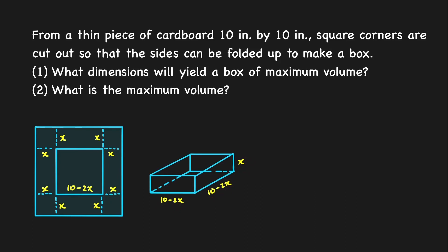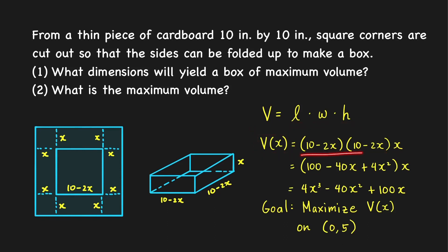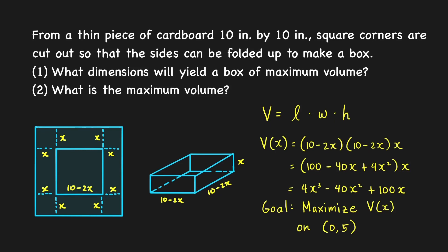The volume of this box is equal to length times width times height, which is equal to (10 minus 2x) times (10 minus 2x) times x. We have now written the volume as a function of a single variable x. Expanding using the FOIL method and then distributing the x, and writing the product in decreasing powers of x, we get V(x) = 4x³ minus 40x² plus 100x. Our goal is to find the maximum value of this volume function.